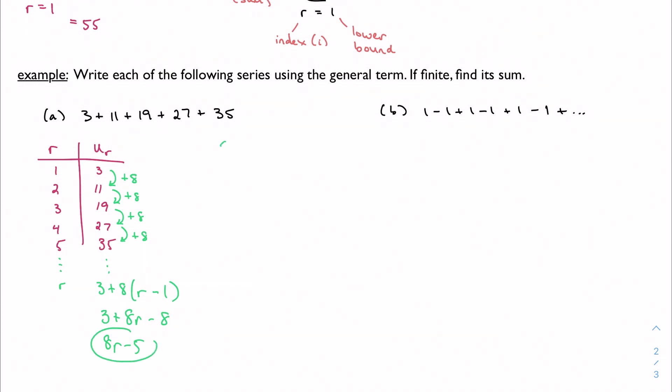So 8r minus 5. So there's my general term. And if I were to write it like a sequence, I would write it this way. But this is not a sequence. This is a series, so I'm going to use my sigma notation. And we notice that r is going from 1 to 5, because there are 5 terms. And my general term is 8r minus 5. And I can find the sum. I can add all these numbers together. So let's see. I'm going to have 14 plus 19 is 33, plus 37 is 60, plus 35 is 95.